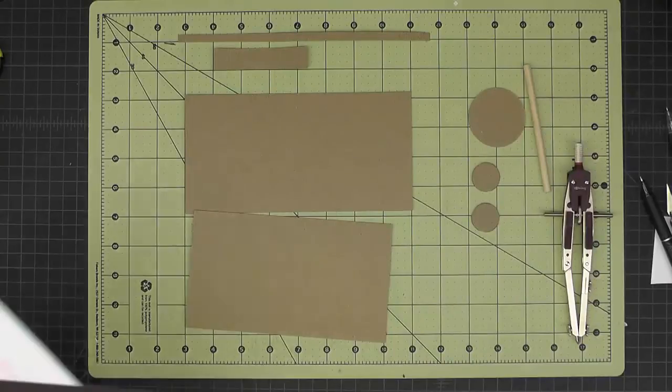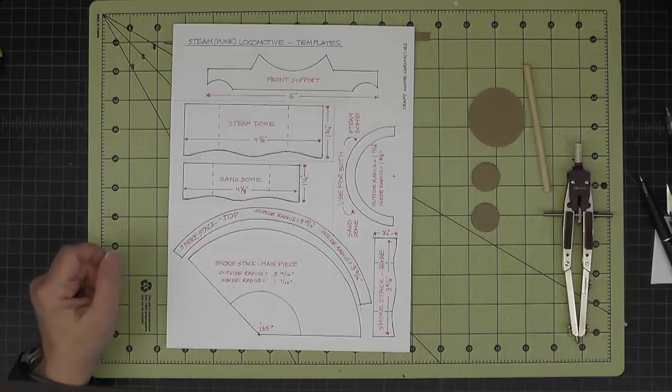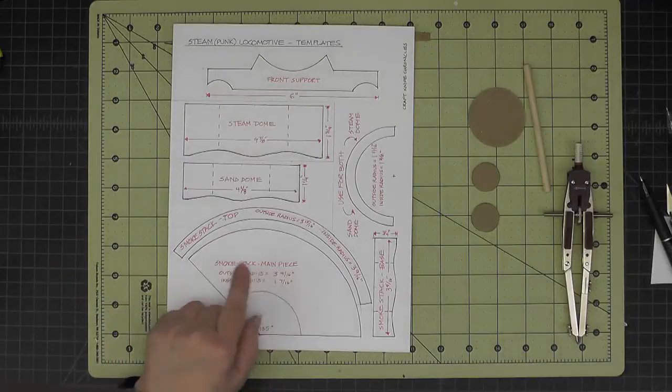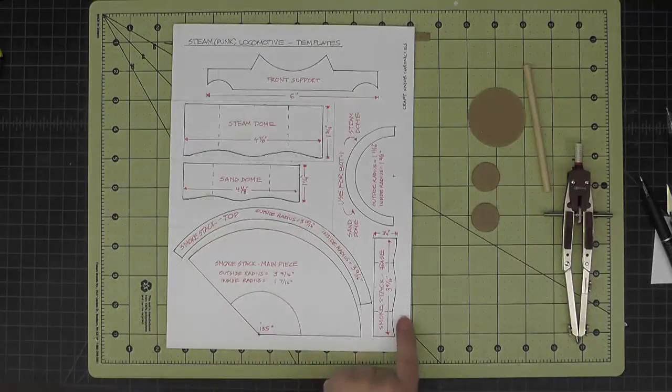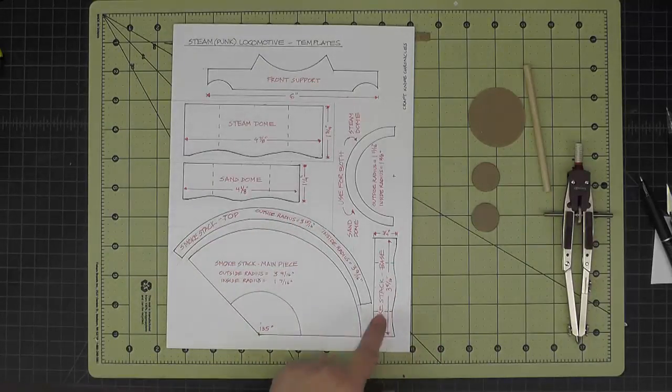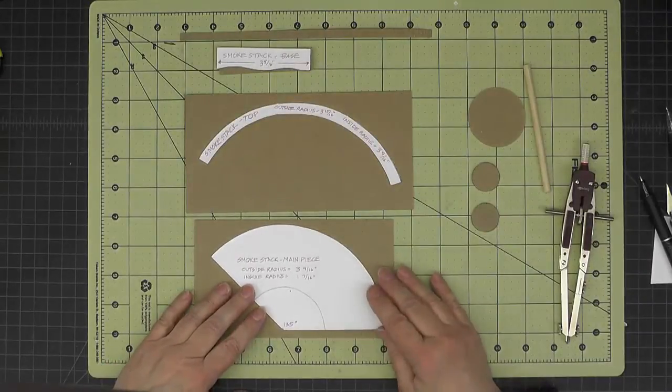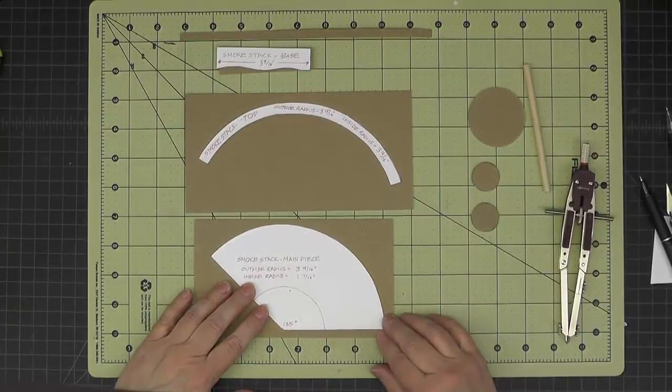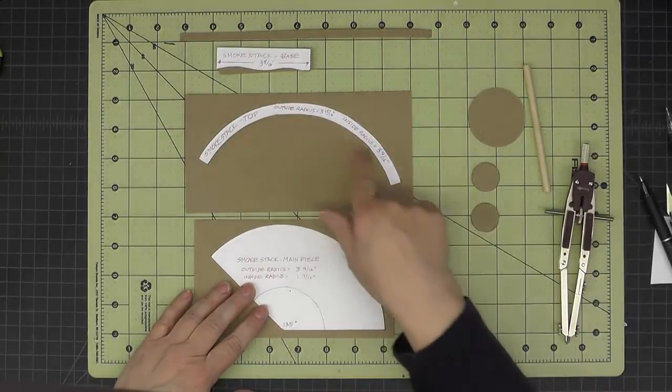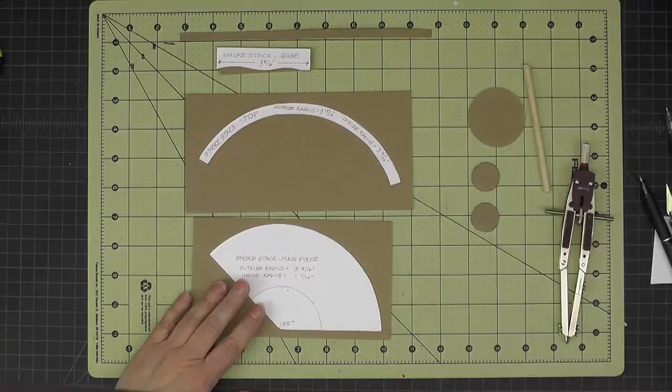So on the templates, we have three templates that we need for the smokestack: the main piece, the smokestack top, and over here at the side is the smokestack base. And let's talk about how to use these for these pieces. Now you could just trace them, or each piece of these curves has the outside radius and inside radius listed.